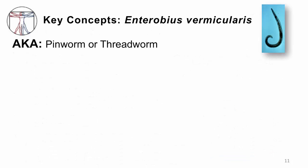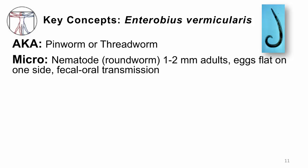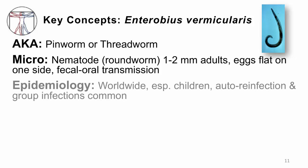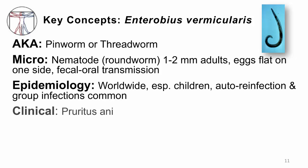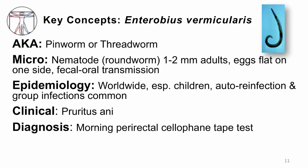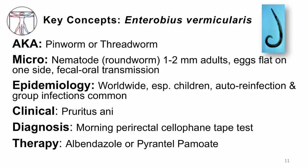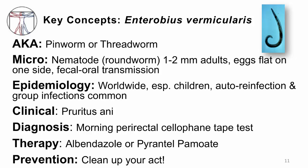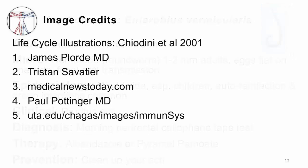Those are the key concepts for Enterobius vermicularis, also called the pinworm or threadworm. It's a roundworm — aka nematode. Adults are one to two millimeters long, eggs are flat on one side, and it spreads by fecal-oral transmission. You can get this infection anywhere on planet Earth, but especially children. Auto-infection and reinfection of groups — especially kids to parents — are common. It usually presents with an itchy butt. Diagnosis is made with a perirectal cellophane tape test, and we treat with either albendazole or pyrantel. Prevention involves cleaning up your act. Thanks for your attention.